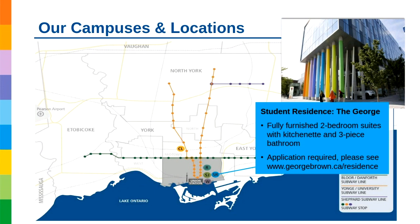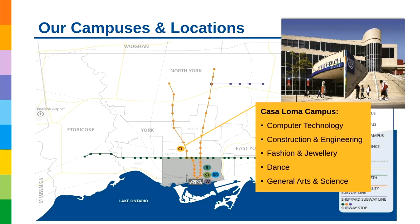Moving on to the Casa Loma campus — one of our larger main campuses. This is where you will find programs in computer technology, construction and engineering, fashion and jewelry, dance, and general arts and science. We actually have two fashion boutiques on this campus where fashion students get experience running a business, learning to manage a fashion outlet or become a buyer. There are lots of great unique labs available, specifically for the programs that run there.